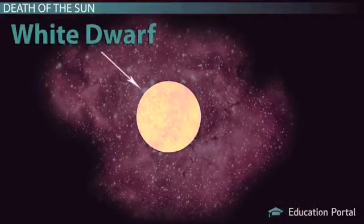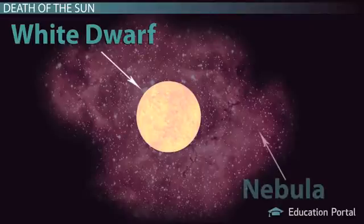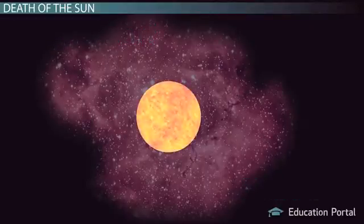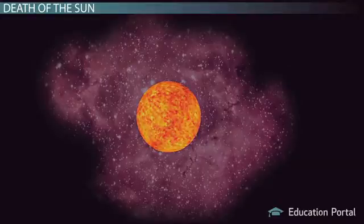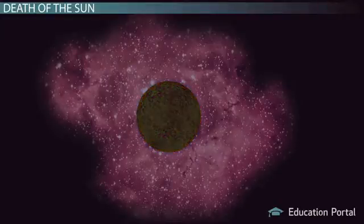The sun is now a white dwarf, and the outer regions of it are a planetary nebula. Since it is no longer doing any nuclear fusion, the white dwarf will cool down slowly until it becomes the same temperature as the rest of the universe, just a few degrees above absolute zero.